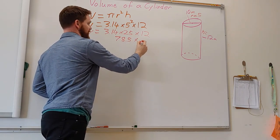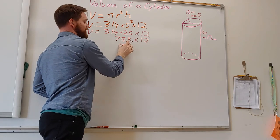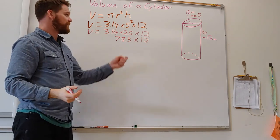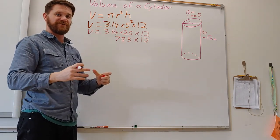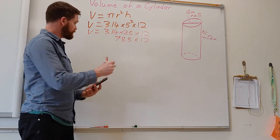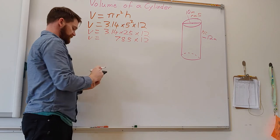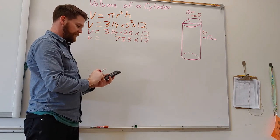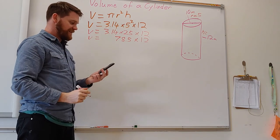78.5 times 12. So this is the area of the top, you could end there. We want to know the volume, this fills it out into a 3D object. So times 12, we're going to get 942.